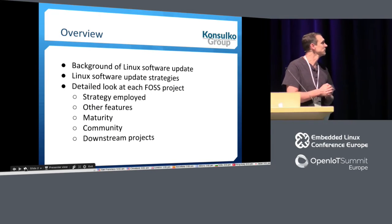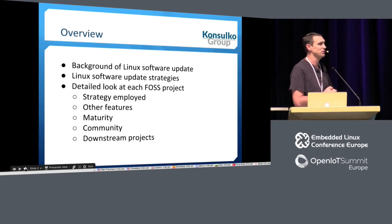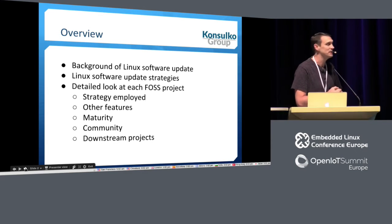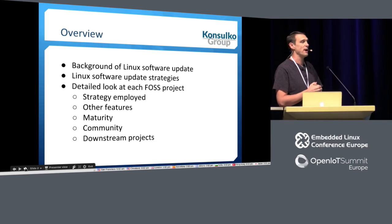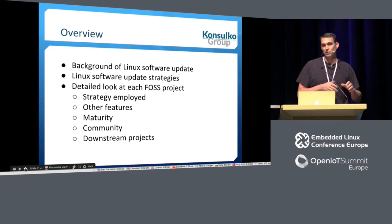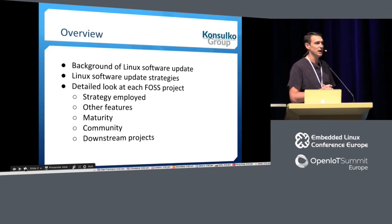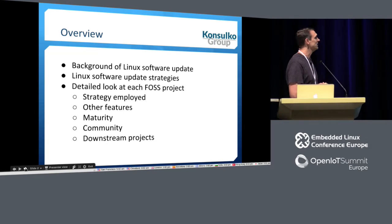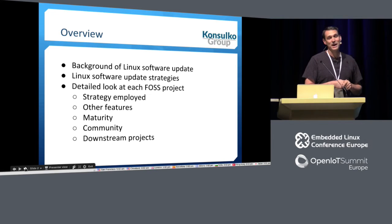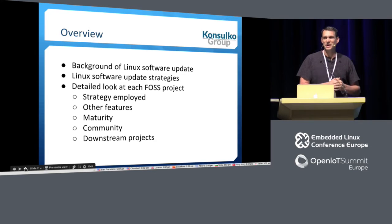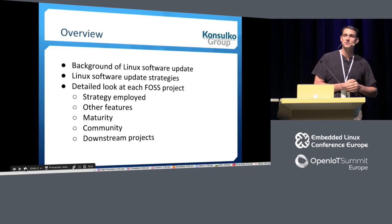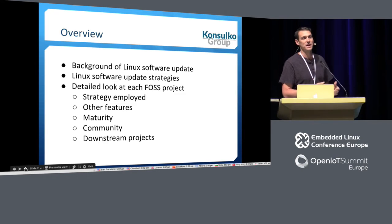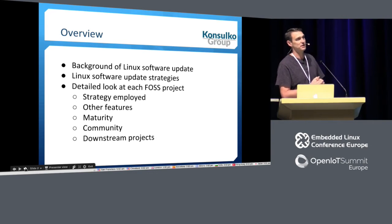We're going to do a little overview and a little background. I usually like to talk a little history about where we came from in doing software update. We've been doing this as a community since 1991 in some form. Then we'll talk about today's set of strategies used to update Linux systems, and then do a detailed look at each free or open source project. Criteria are what strategy they're employing technically, any other features they might provide, maturity, the community around these technologies, and what kind of uptake and downstream projects are using them.